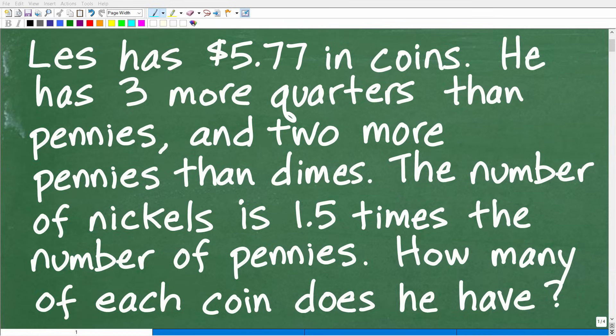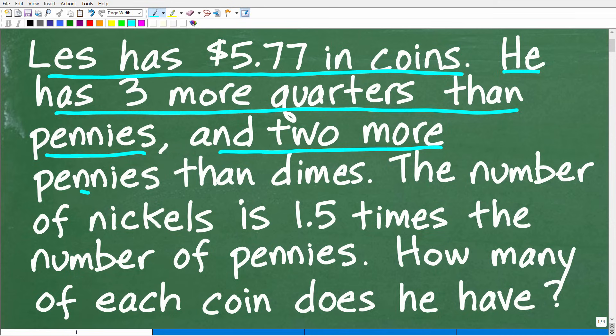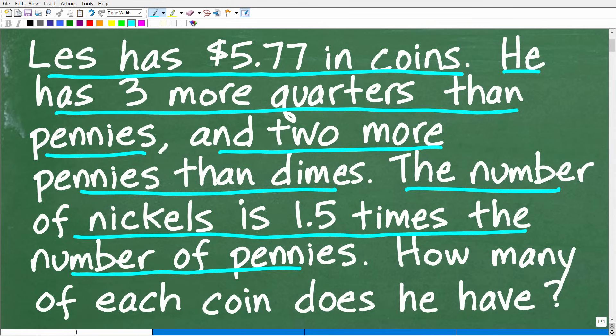Okay, so let's see if you have the math skills to solve this interesting little math word problem. Matter of fact, let me go ahead and read the problem. It is the following: Les has $5.77 in coins. He has three more quarters than pennies and two more pennies than dimes. The number of nickels is 1.5 times the number of pennies. But how many of each type of coin does Les have?